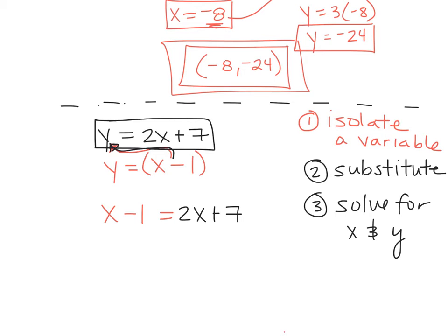X minus 1 equals 2X plus 7. How do I solve that for X? Take the X away here. We're going to take away an X. So 2X minus X is X. So this is done. This is gone. You have X plus 7 equals negative 1. And then you're going to take away the 7. So negative 8 is your X value.